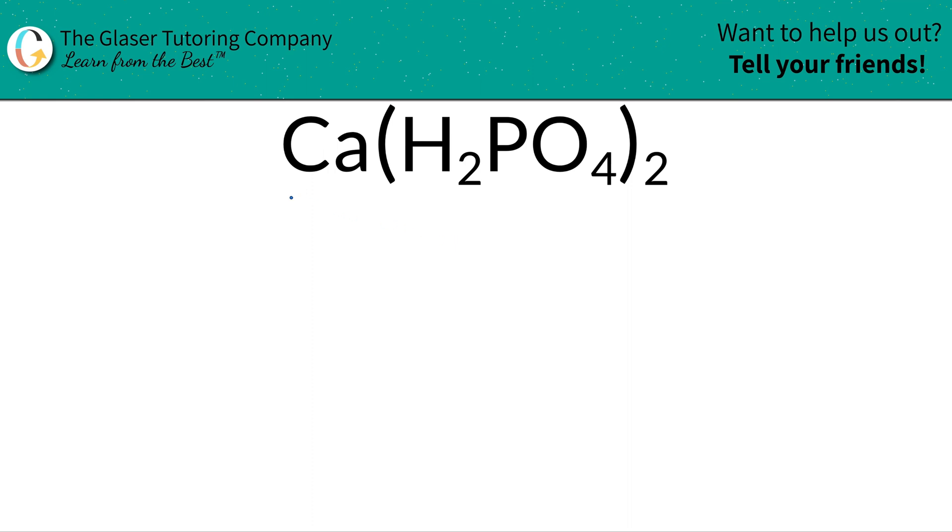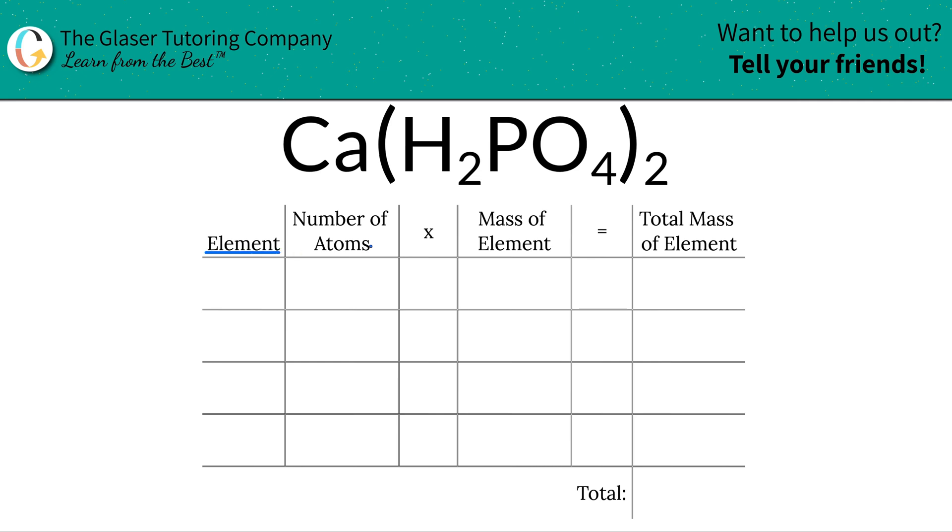So what is the percent composition of each element here in calcium dihydrogen phosphate? Well, first thing we got to do is first find the mass. So let's use this table to help us out. The first thing we have to do is identify the various elements in this compound.